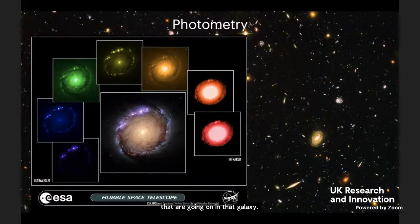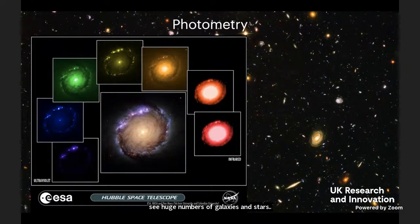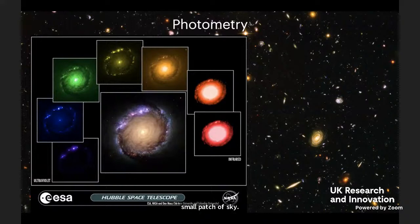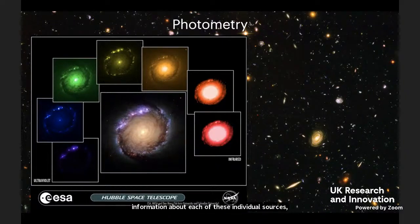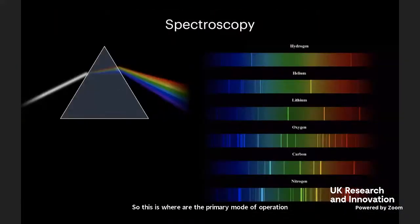The benefit of photometry, particularly for things like Euclid, is that you can map very large areas and see huge numbers of galaxies and stars. But the downside is that you can't get as much information about each of these individual sources — there's only a limited amount of additional information about what's going on with the physical processes. This is where our other primary mode of observation comes in: spectroscopy.